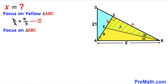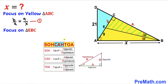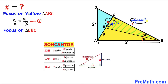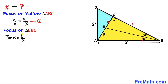Now let's focus on triangle EBC and recall SOH-CAH-TOA. We're interested in tangent: opposite divided by adjacent. Here b is the opposite side, a is the adjacent side, and our angle is alpha. So tangent of alpha equals b divided by a. Substituting into equation 1, we get tangent of alpha equals 9 divided by x.